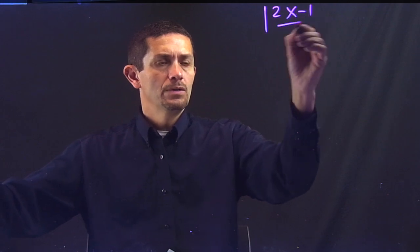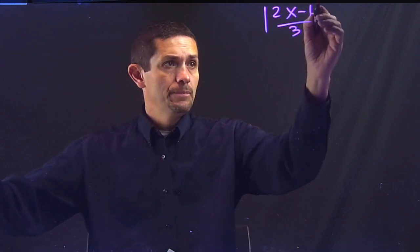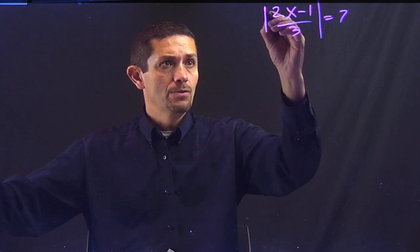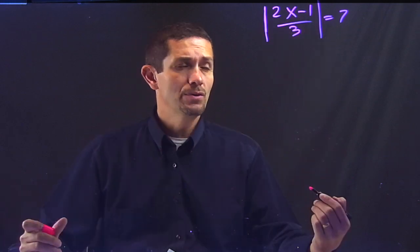Okay, so now that we have those basic ones down, let's do one more and even more complex. Now, let's pretend that I have 2x minus 1 over 3 equals 7. So, absolute value 2x minus 1 over 3 equals 7.